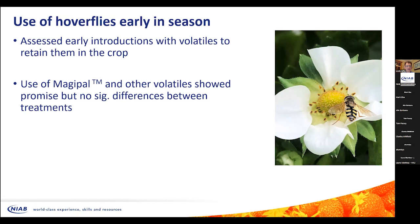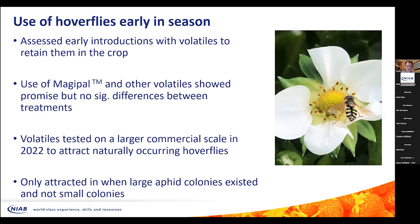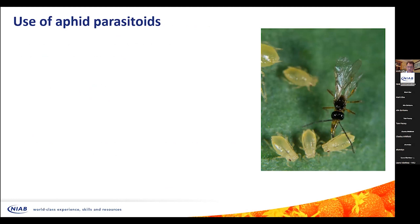We tried to get hoverflies in early and added volatiles to retain them in the crop, initially using Magicpal. Magicpal is useful because it enhances numbers of beneficials whilst also repelling insect pests. We combined it with other volatiles and it showed some early promise, but no significant differences between treatments in 2022. Testing other volatiles on a larger scale to attract naturally occurring hoverflies also only worked when aphid colonies were large enough — when colonies were still small we couldn't achieve the attraction needed for hoverflies to do their job.